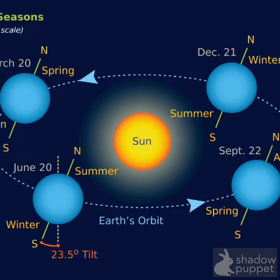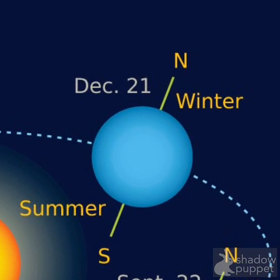As you can see, when it is winter in the northern hemisphere, it is summertime in the southern hemisphere. This is because the Sun hits the southern part of the Earth more directly. Whereas in wintertime, it's colder because the Sun doesn't hit that part of the Earth as directly.